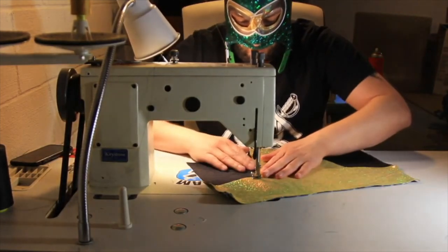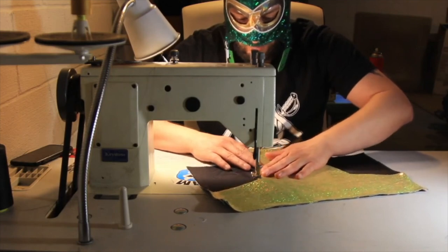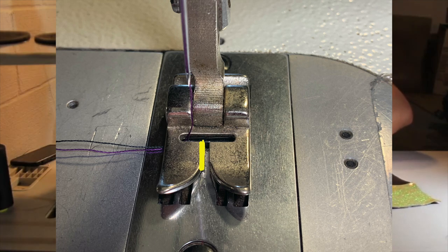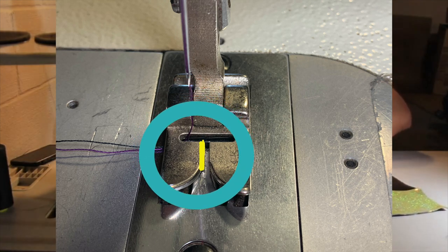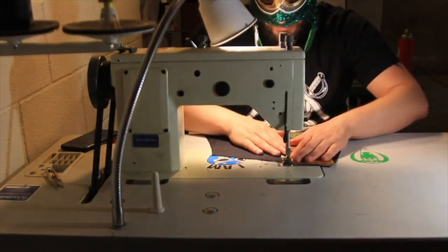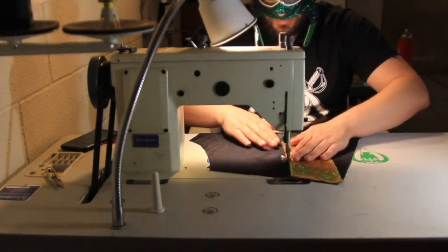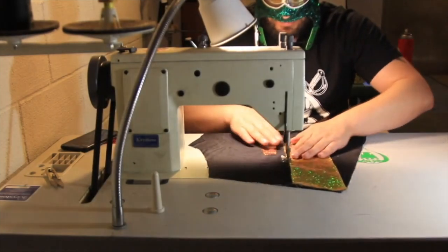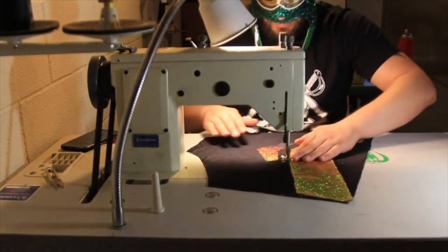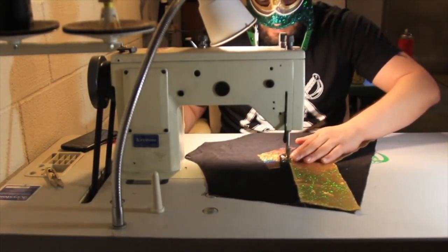When sewing down your applique, it helps to find some kind of guideline on your presser foot. I like to line the edge of the applique with the inside lip of the presser foot here. Your goal is to encase the edge of each applique piece in your stitch, with the needle entering the fabric on the right side just barely off the edge of the applique, and the needle entering the fabric on the left side solidly through the applique itself.